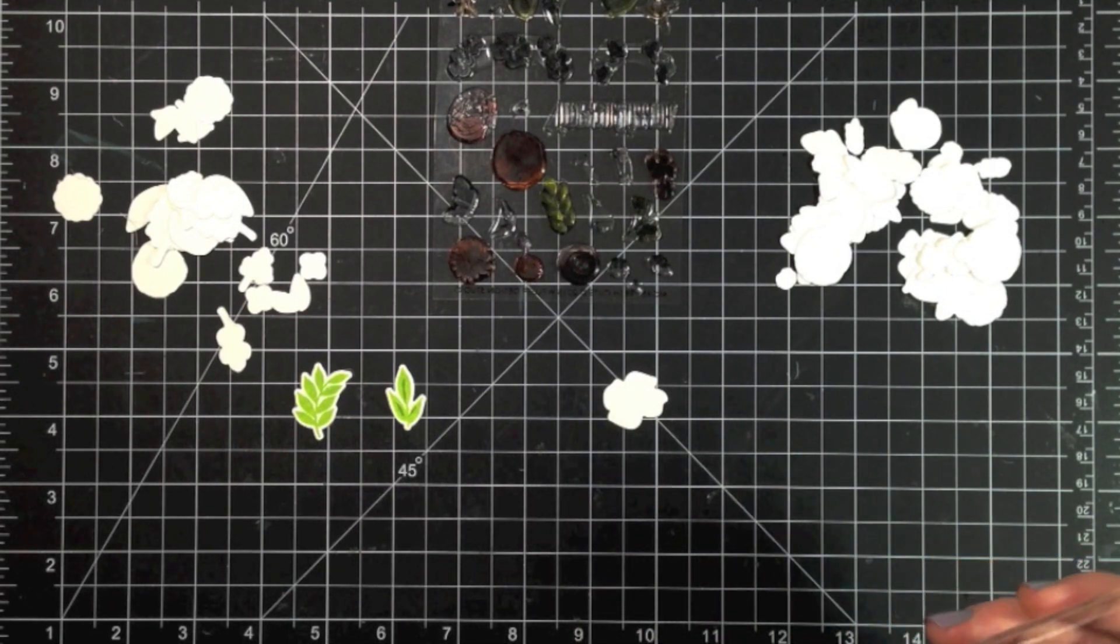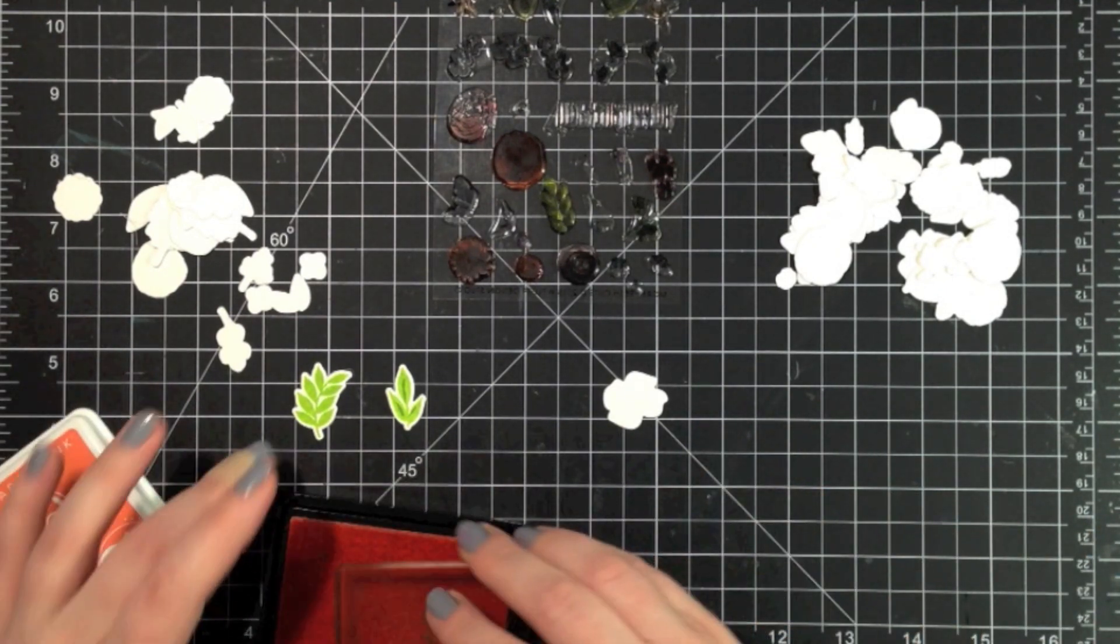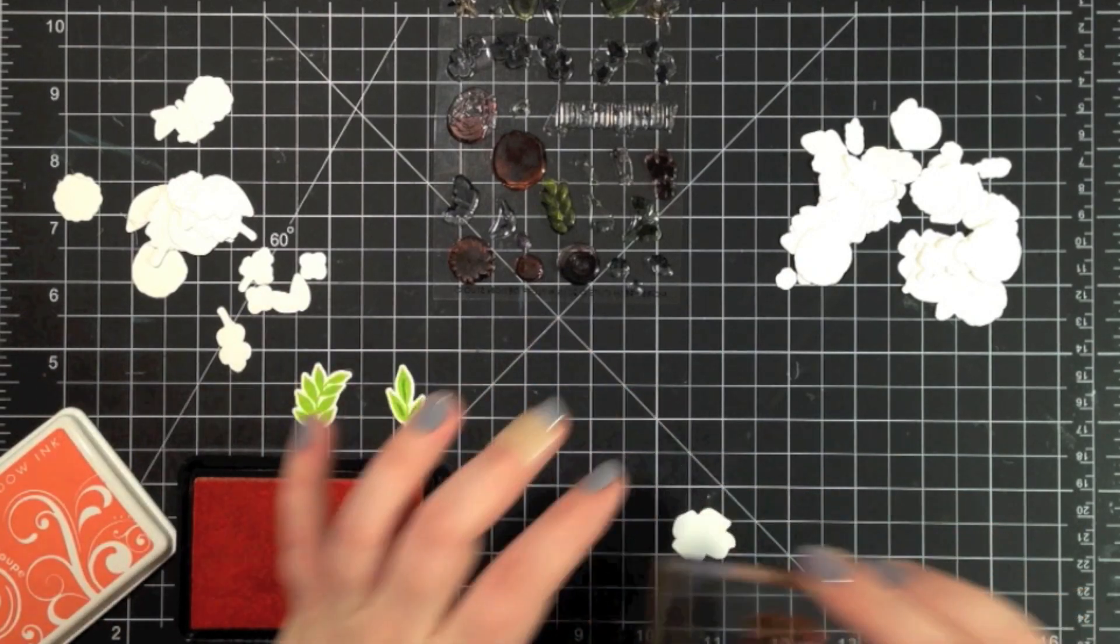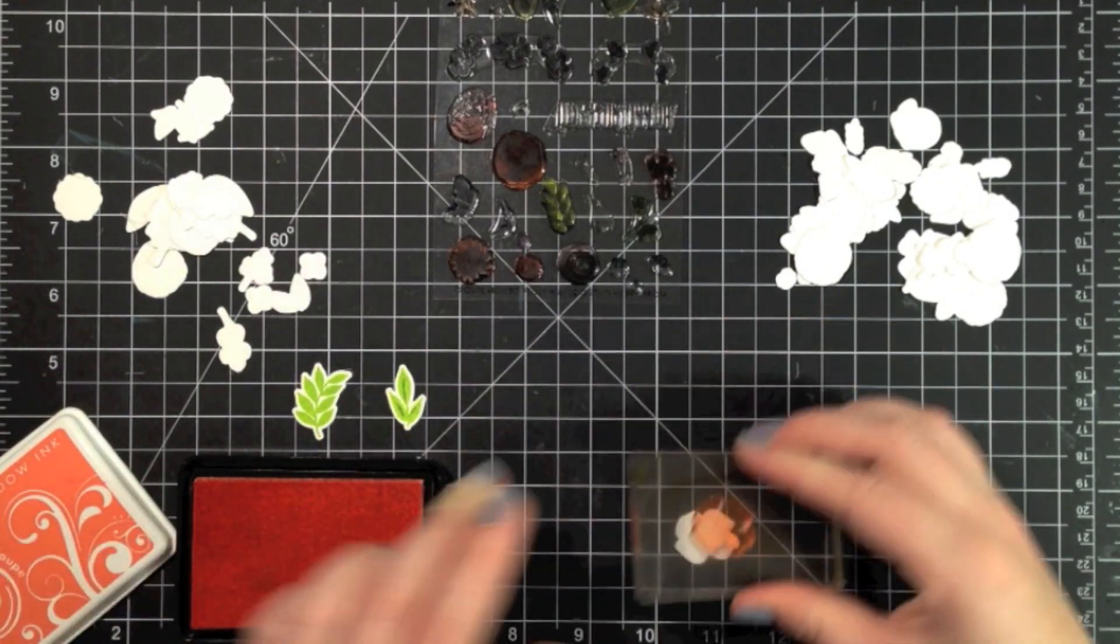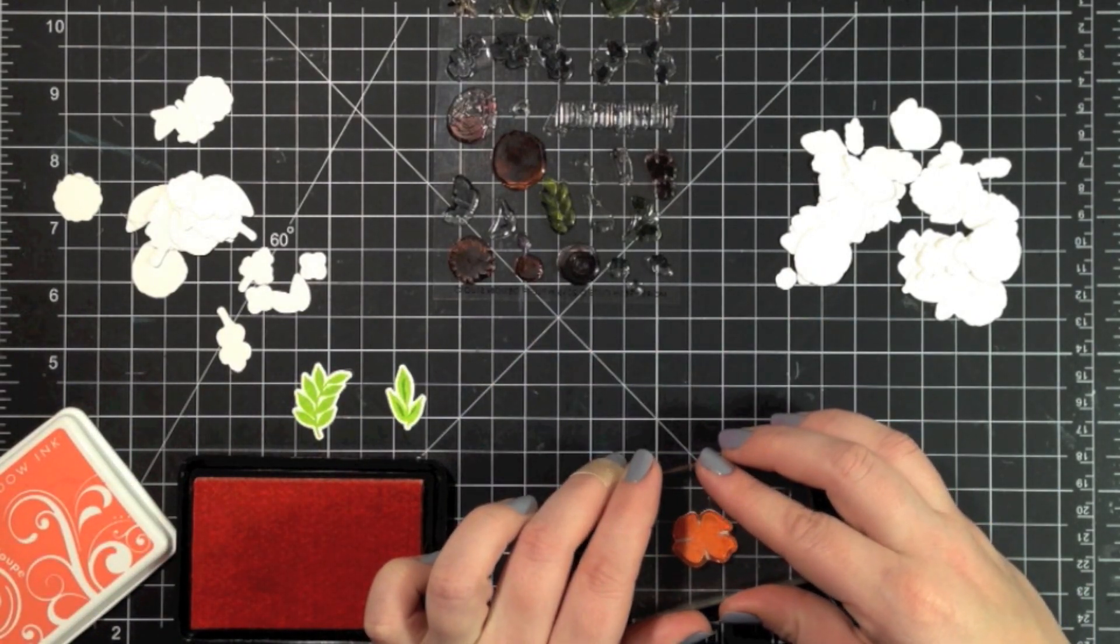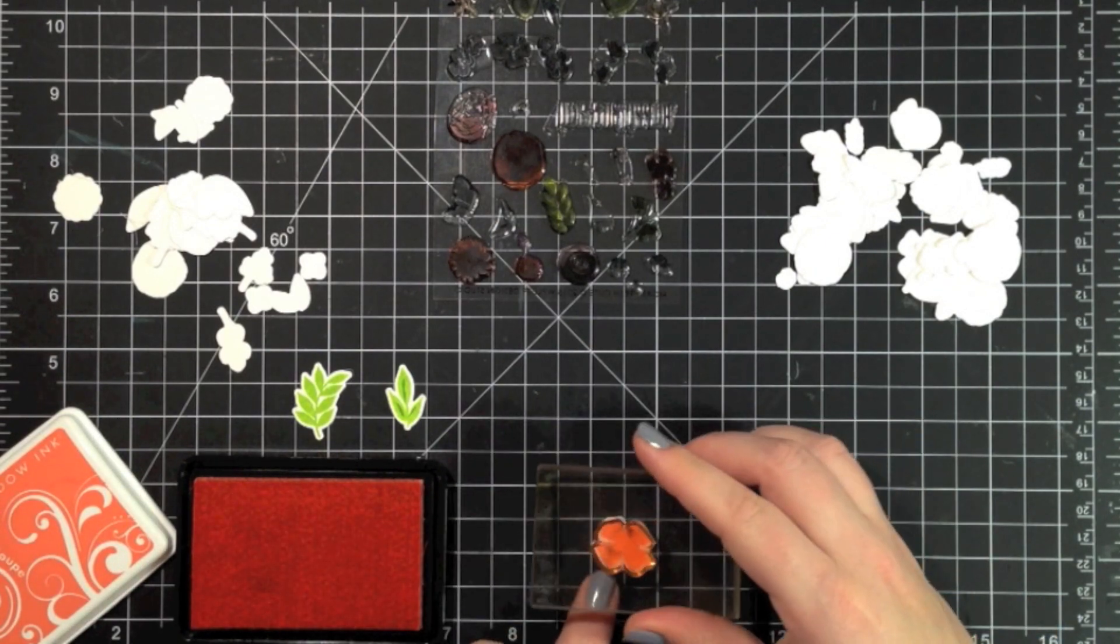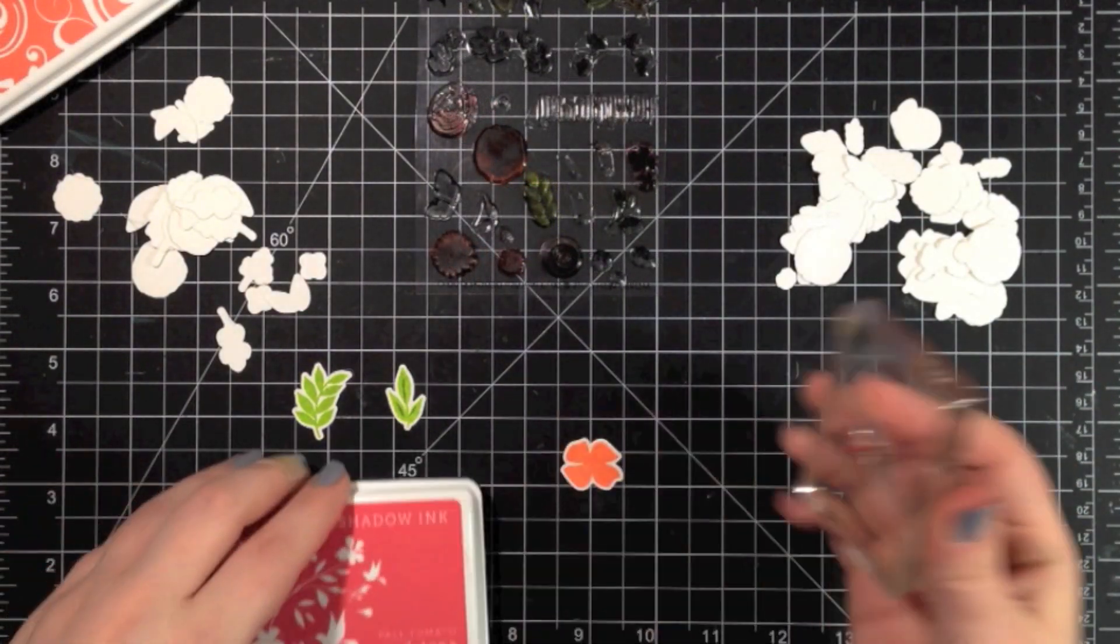So now I'm going to move on and do a couple of flower images. This first one here I'm using Soft Cantaloupe and Pale Tomato inks from Hero Arts. I'm just going to stamp that solid image first onto the die cut. You can see how perfectly they fit right in the center there.